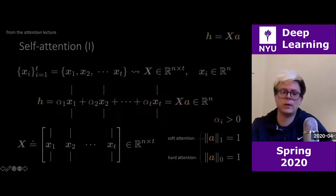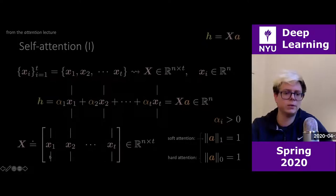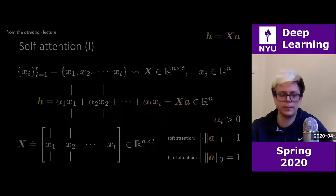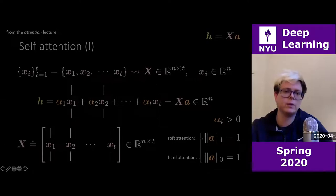All the coefficients in a are positive and sum to one. If only one is actually one, we have hard attention. Capital X is just the collection of x's. It's a set — a set means there is no order, no sequence. This linear combination of columns is just a matrix multiplication.